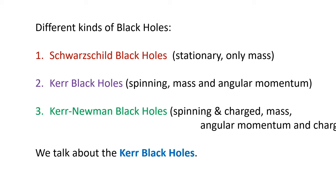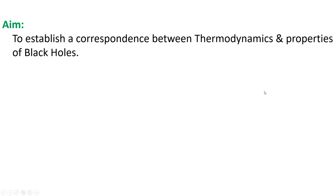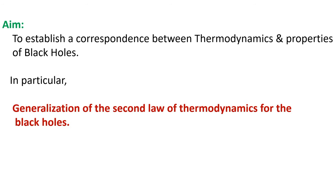There are different kinds of black holes. Schwarzschild black holes are stationary and only have mass. Kerr black holes are spinning and have mass and angular momentum. Kerr-Newman black holes are spinning and charged, having mass, angular momentum, and charge. We will talk about Kerr black holes — those having angular momentum and mass but no charge — and aim to establish a correspondence between thermodynamics and properties of black holes, particularly a generalization of the second law.